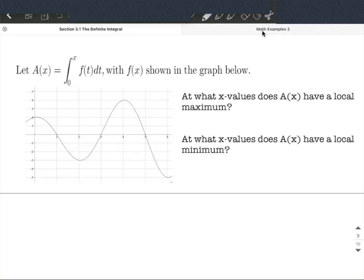So that's important that they gave us the graph of the derivative. f(x)'s graph is given, not A(x), but they're going to ask us questions about A(x). When is that going to have a local maximum or a local minimum? So they're asking us about A(x), not f(x). This is where everyone makes their mistakes.